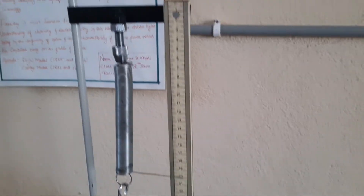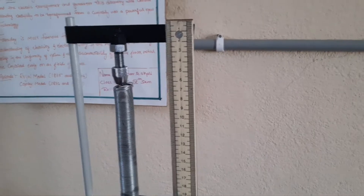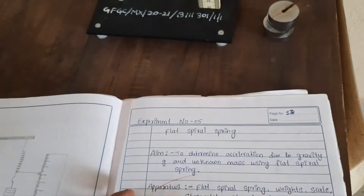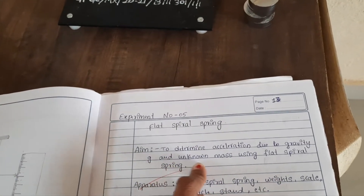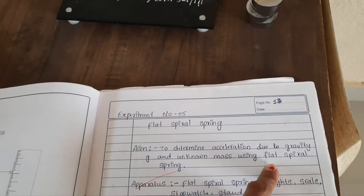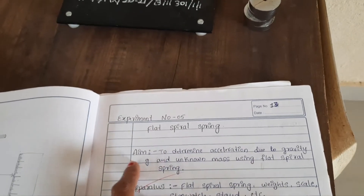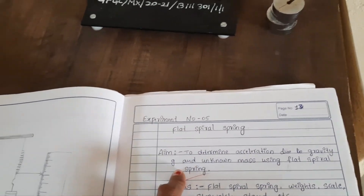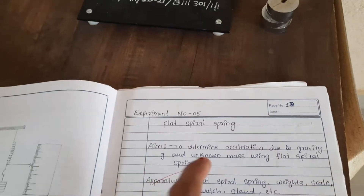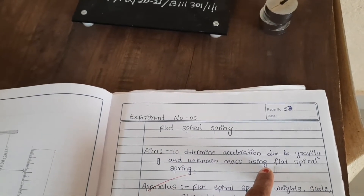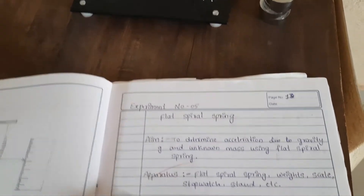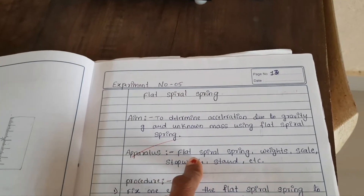This is the experimental setup for the flat spiral spring. In this experiment we are going to determine acceleration due to gravity g and unknown mass using a flat spiral spring. The aim of this experiment is to find out acceleration due to gravity and also the unknown mass of a given weight.